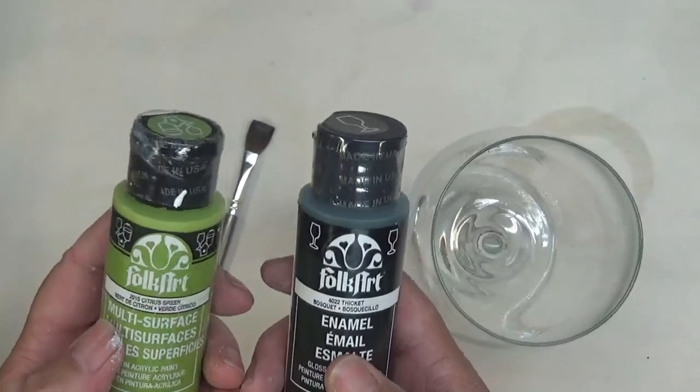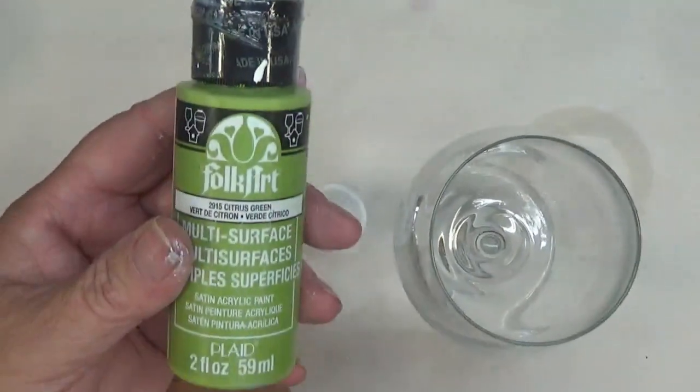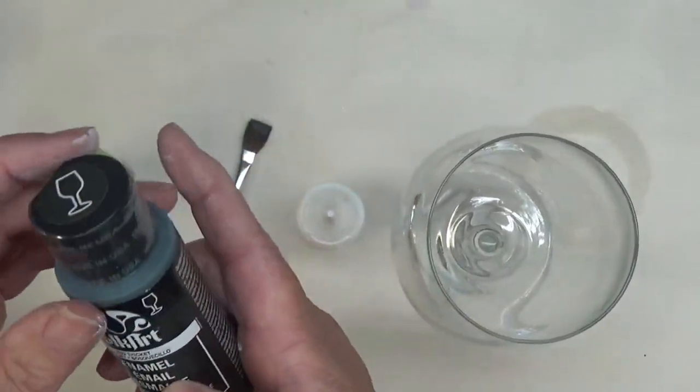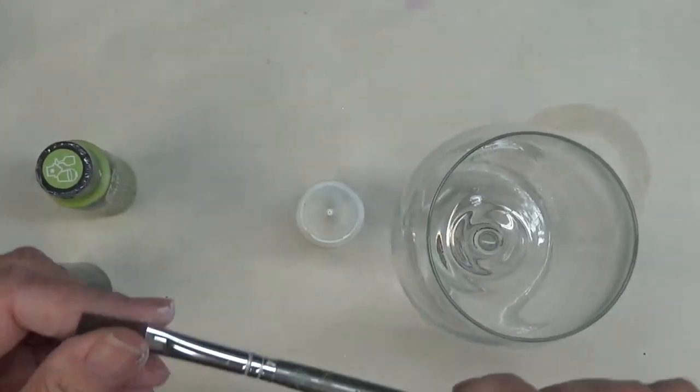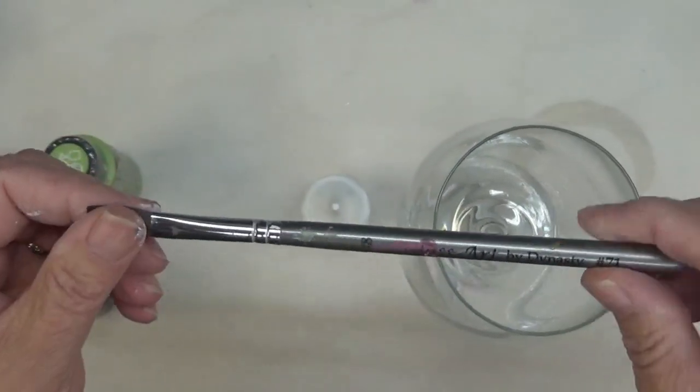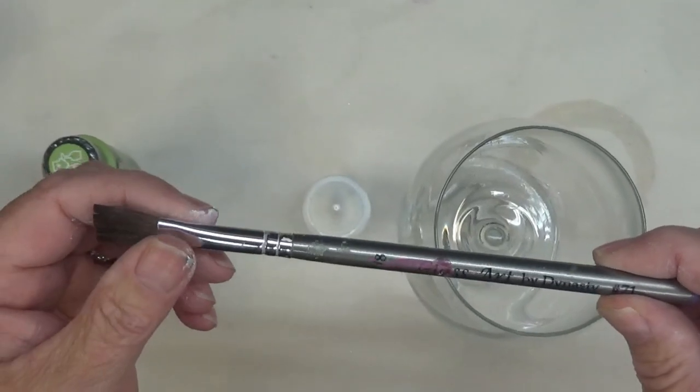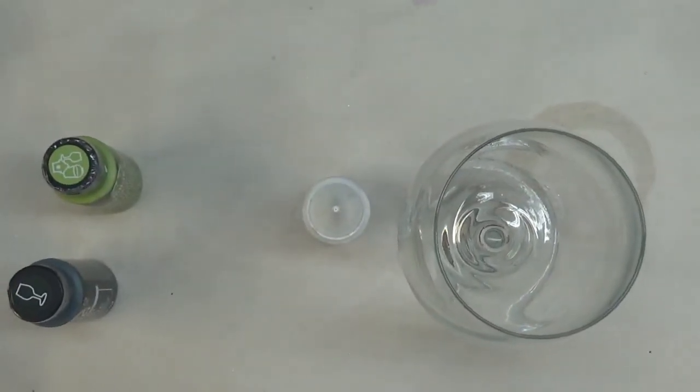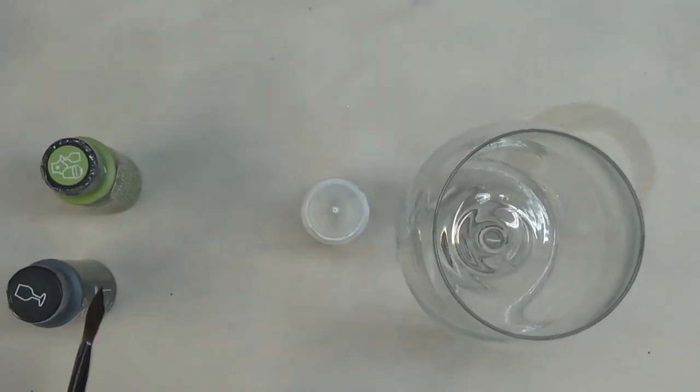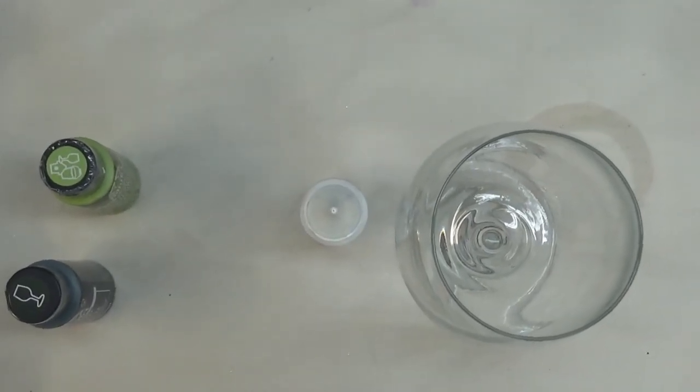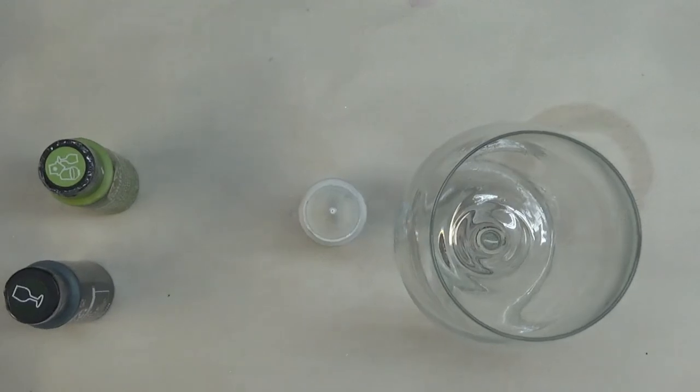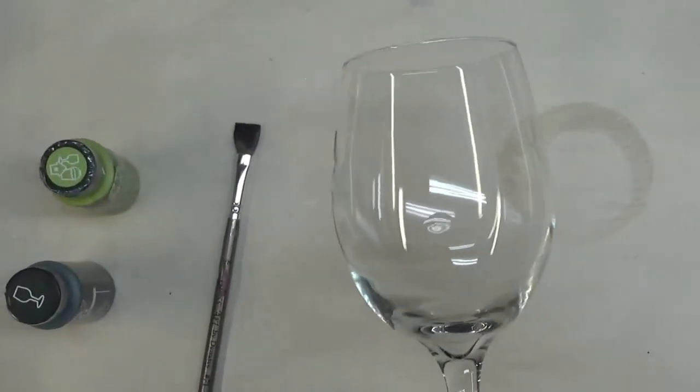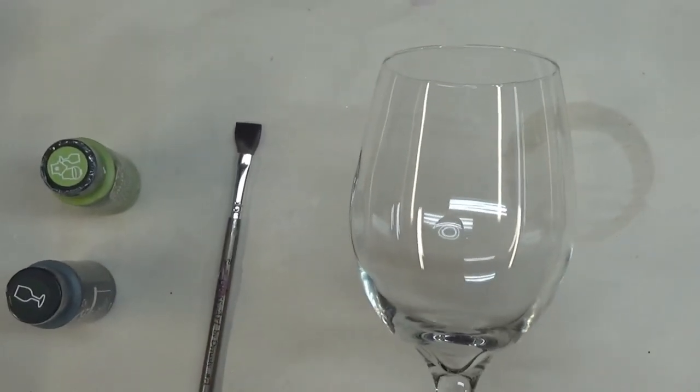The stem is going to be Citrus Green and Thicket. Citrus Green is Folk Art multi-surface paint, and the Thicket is Folk Art Enamels. The brush I'll be using to do the stem with is the 3/8 Glass Art by Dynasty No. 71. Love these brushes when you want good coverage, doing like one color or mixing colors together. I've already cleaned the glass. It's very important that you clean your glasses before you actually start painting on them.